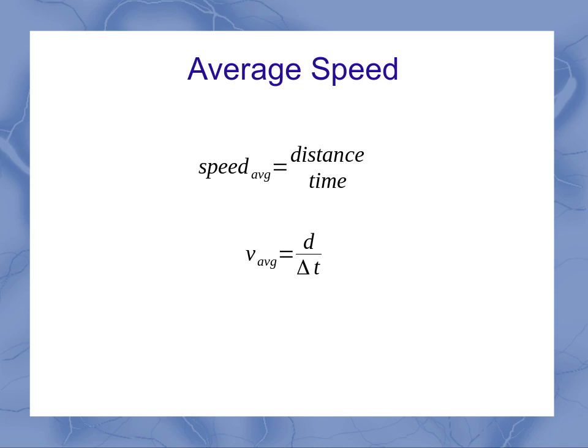This is sometimes noted using a v with a subscript of avg for your average speed, d for the distance, and delta t, where again delta means the change in, to give us our time span.